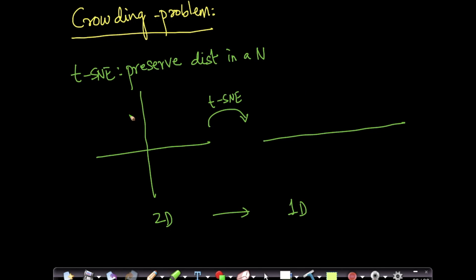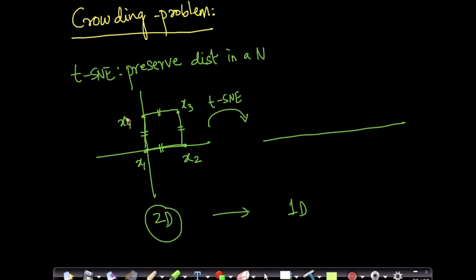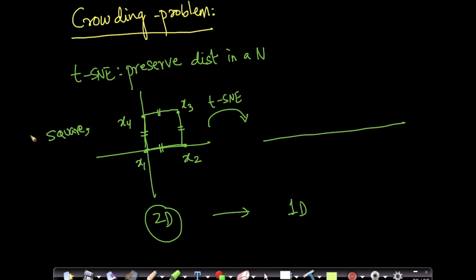I want to embed this point. Suppose my four points are: my first point is x1, my second point is x2, my third point is x3, my fourth point is x4. Let us assume they are corners of a square. So all these points are equidistant — they form a square. In 2D it is a square, in 3D it is a cube, and in N-dimensional space it is a hypercube.